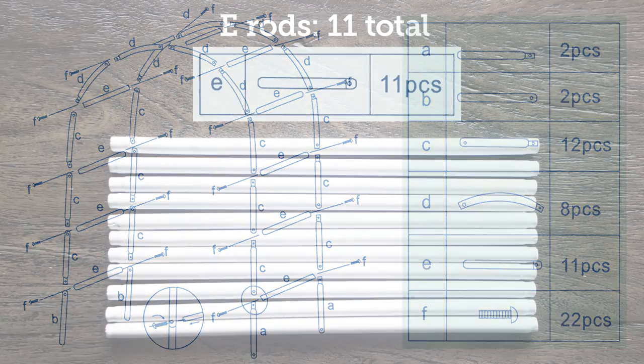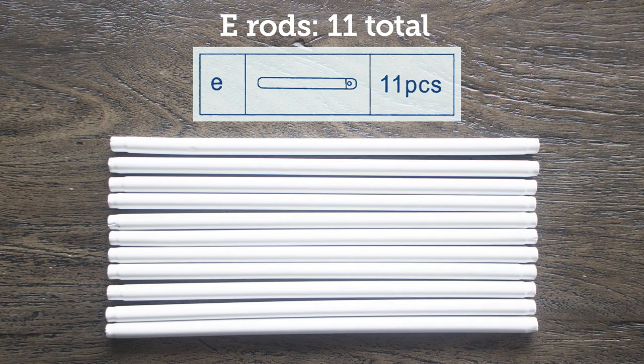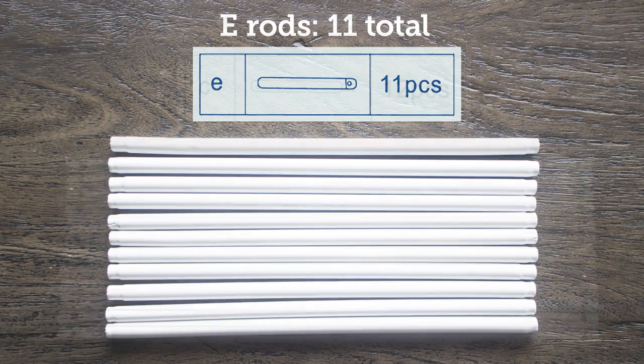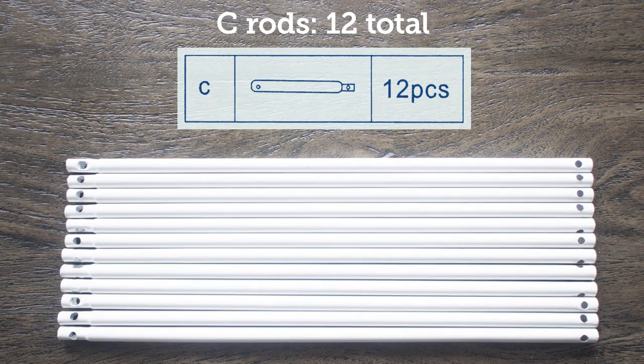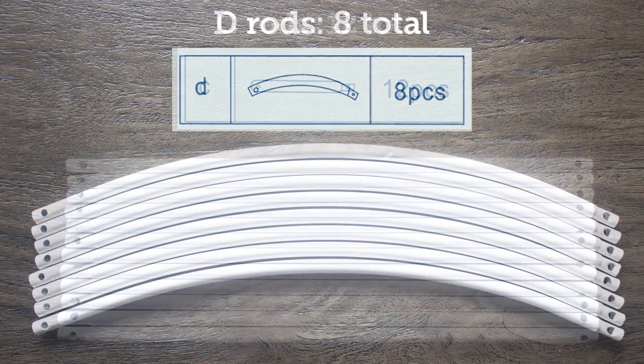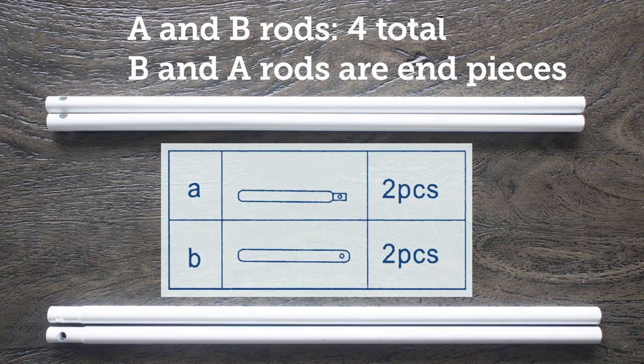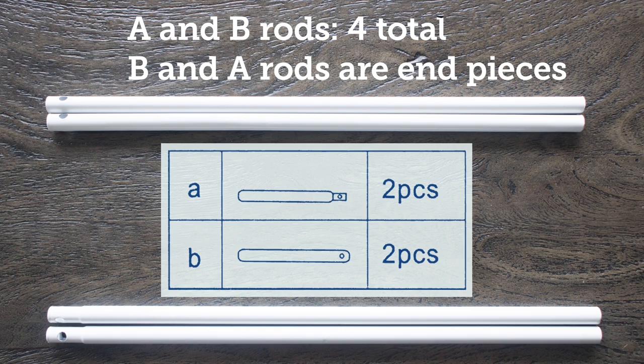These are E rods and they're a total of 11 pieces. C rods, there's 12. D rods, there are 8. They're curved. And the A and B rods, there's a total of 4. So basically the ones that are going to be on the floor.